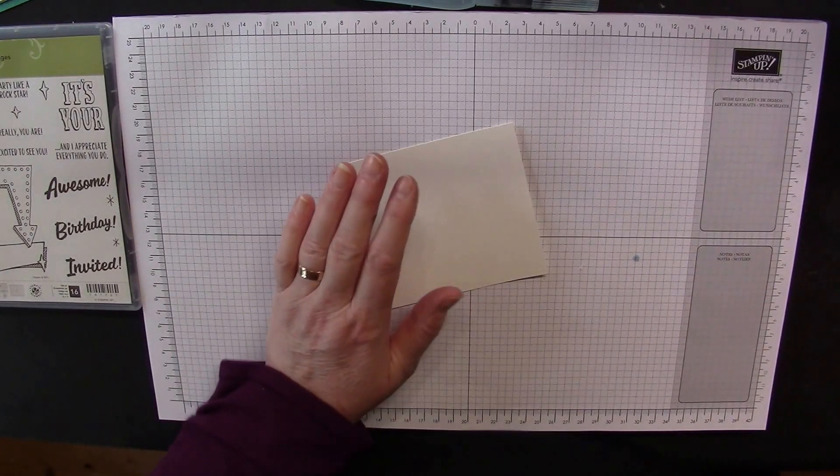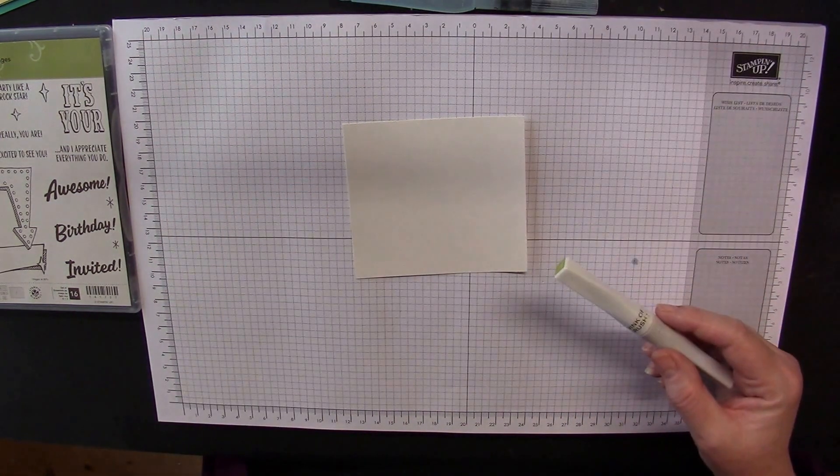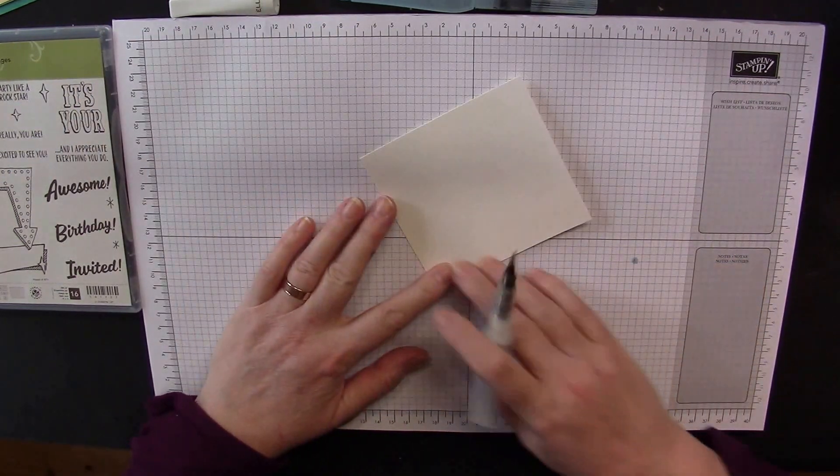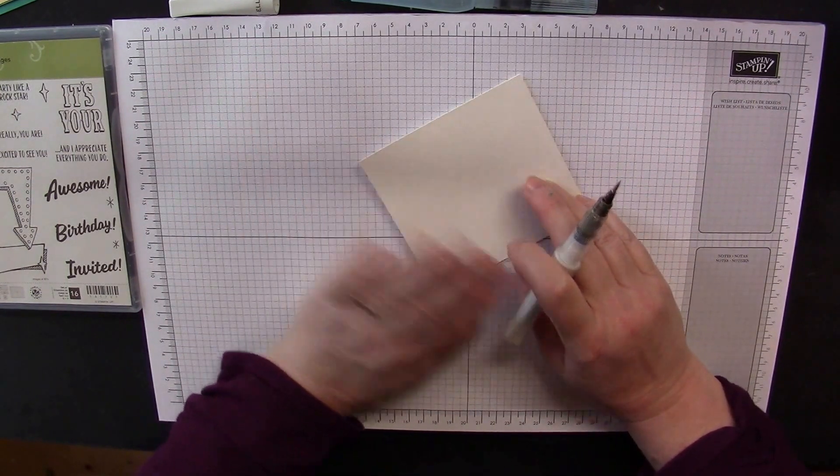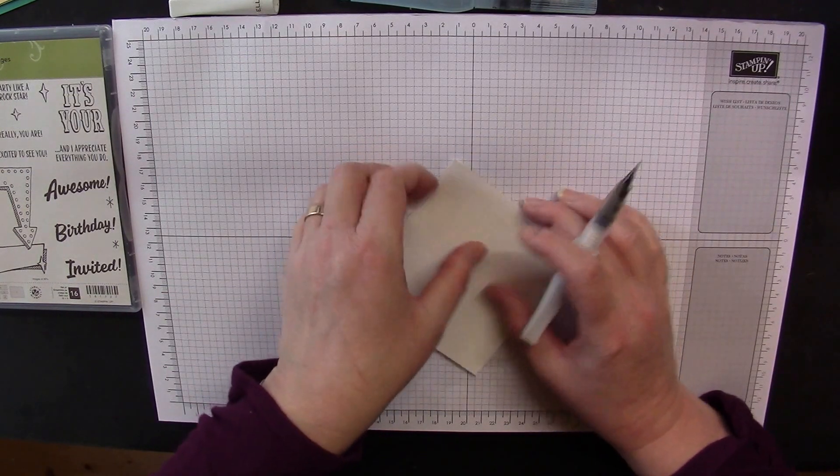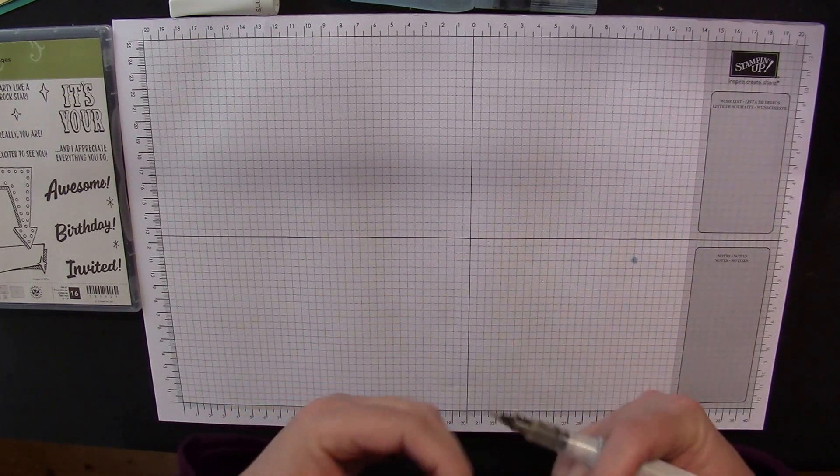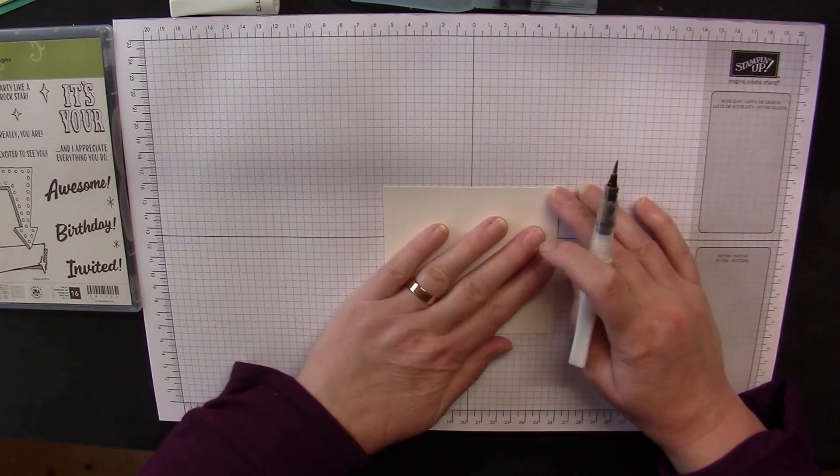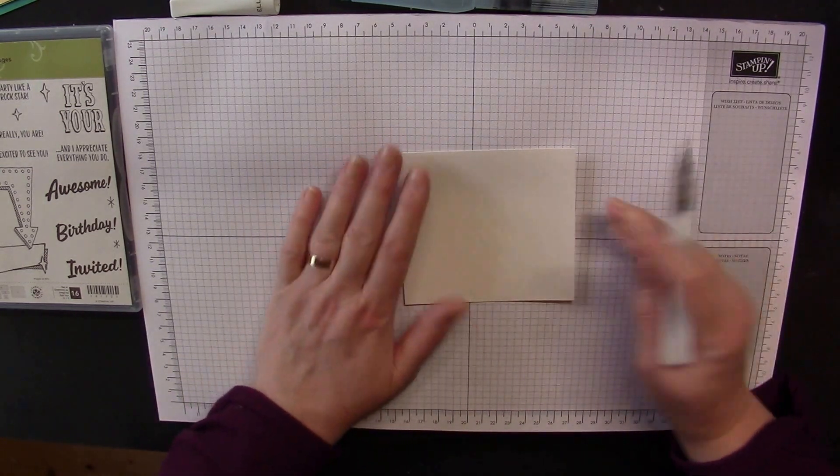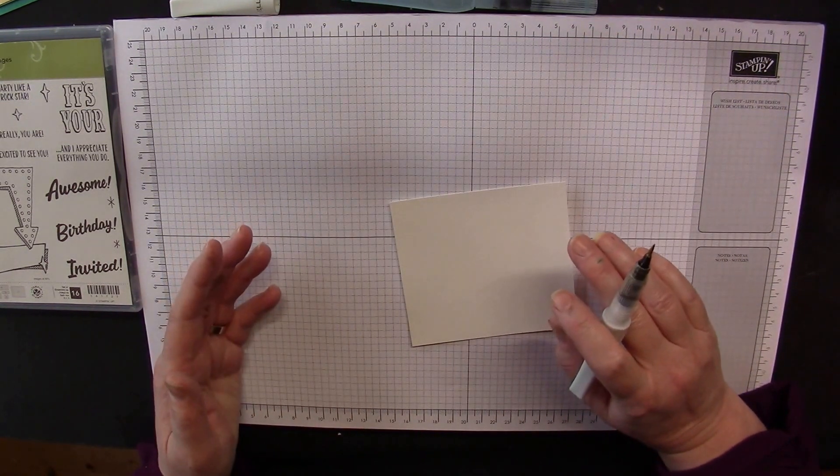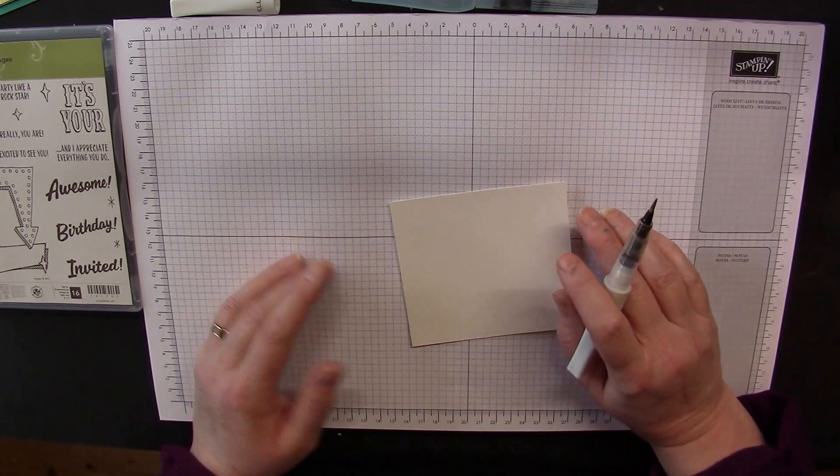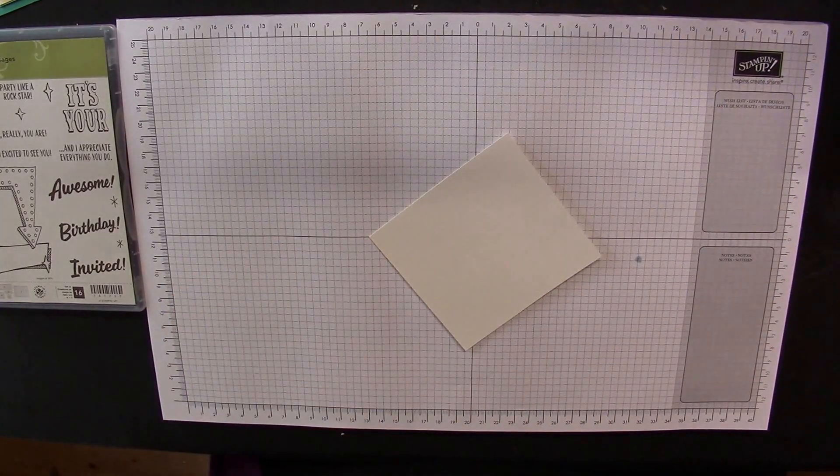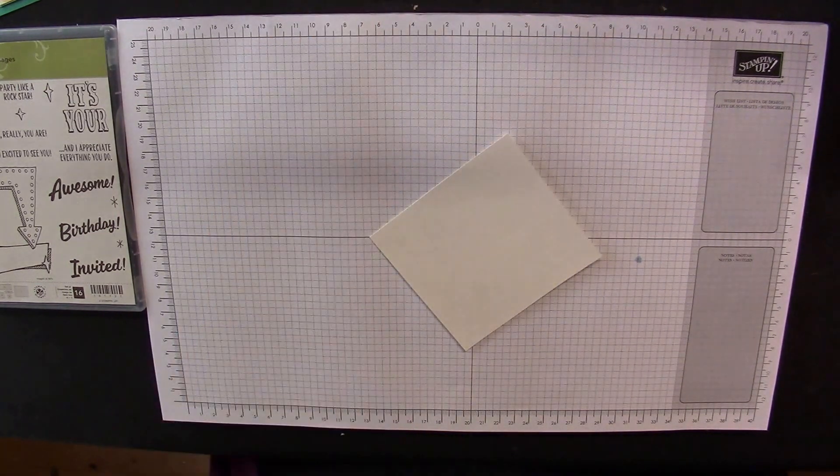Pop your card base to one side because we're going to be getting in an inky watery mess. Then you need a piece of shimmery whisper white cardstock which measures 10cm by 11cm, and a piece of mint macaron that measures 10.4cm by 11cm. The mint macaron actually works really well with the new ink colors.